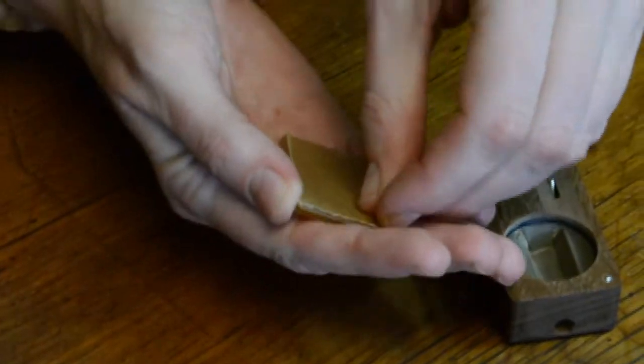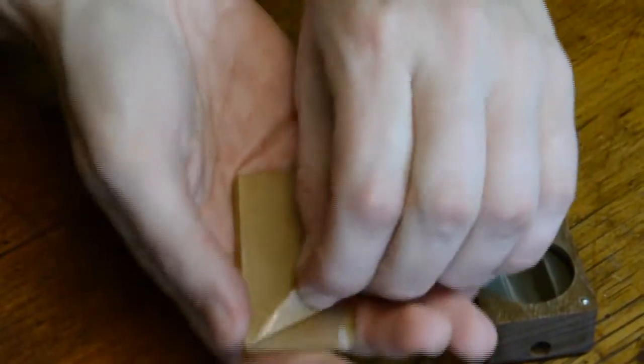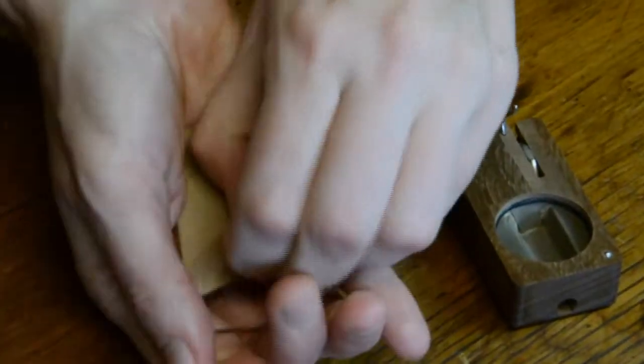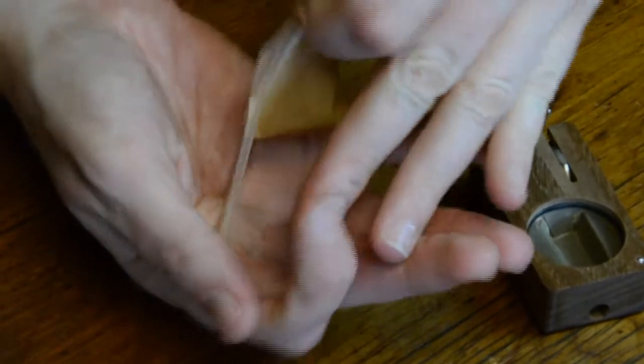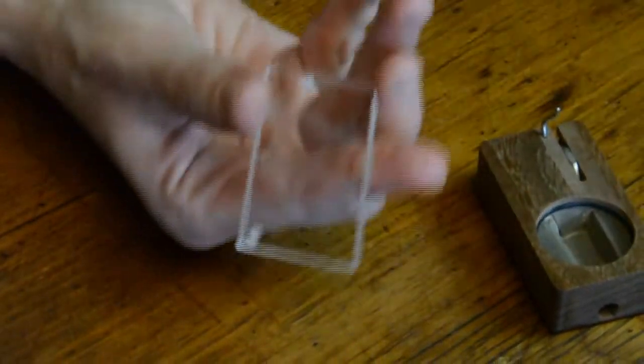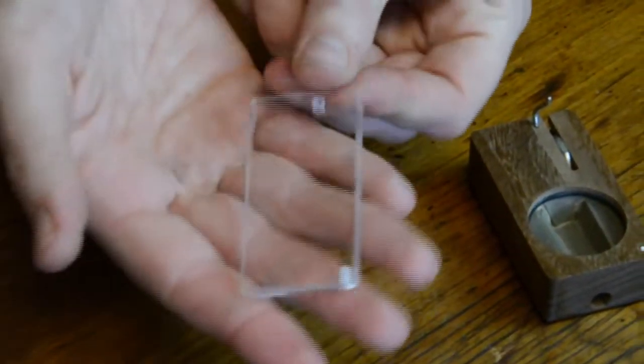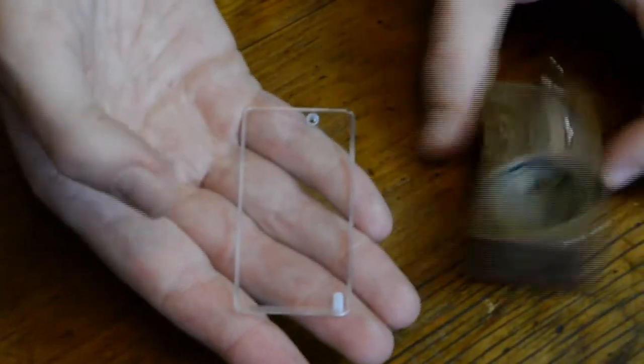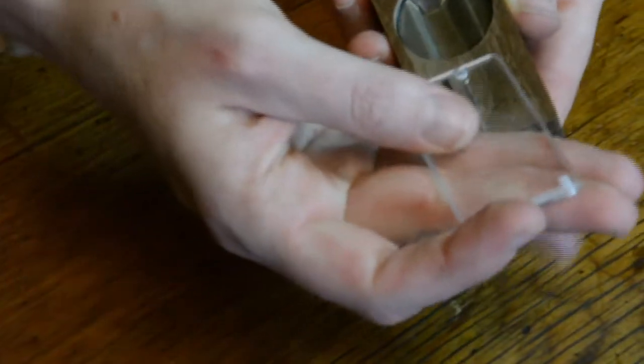Next, grab your replacement lid and peel off the protective covering from both sides. Be sure that the indentation for the cover lock is facing down, and then slide the new lid on.